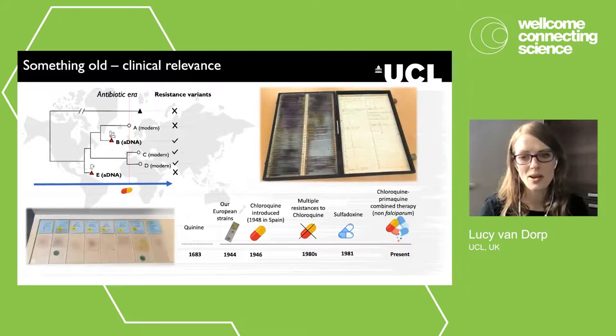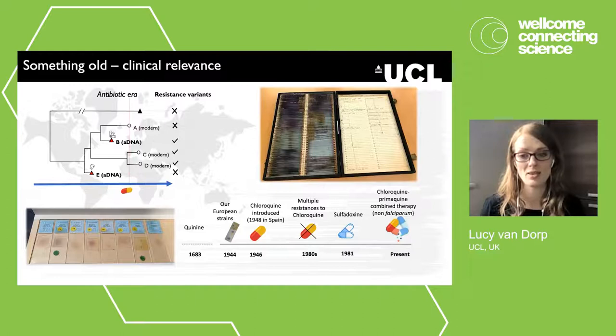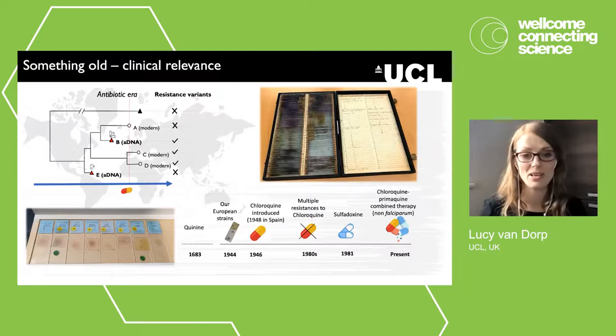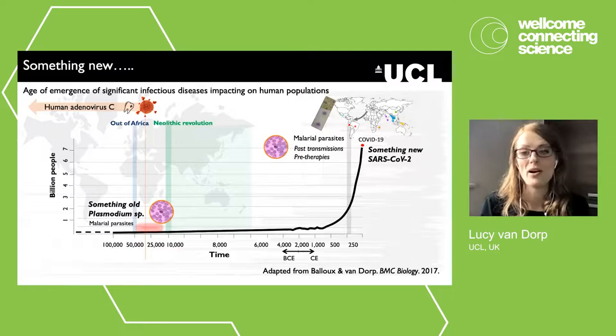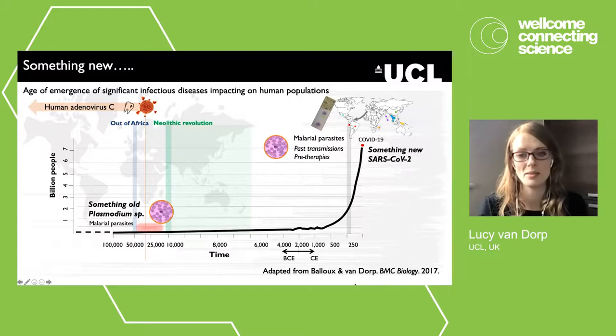This work highlights the value of old medical collections and pathology collections for generating past genomic data, offering opportunities to observe pathogen evolution through the 20th century. I'm currently building up collections through collaborations with curators and public health archivists — if you know of possible collections, I'd love to hear from you. Studies on malaria and adenovirus C are good examples of how past observations can be used to make inferences about associations and transmissions that might be lost using modern data alone.